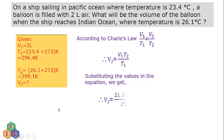And let us see what is the value we are going to get. V2 equals V1, V1 we know is 2 liters, into T2, T2 is 299.1 Kelvin, divided by T1, T1 is 296.4 Kelvin.